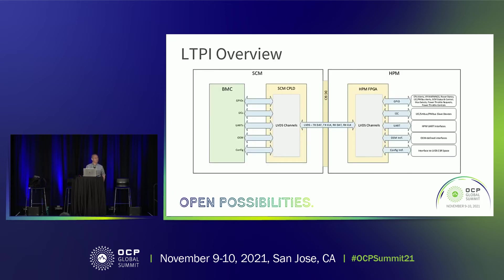This is an overview of what it looks like. On the right-hand side are all the signals coming off the HPM. It gets tunneled through an FPGA, goes across the connector, and all those feed into the BMC. There are examples of this by Lattice, which is out on the experience center floor if you want to take a look.